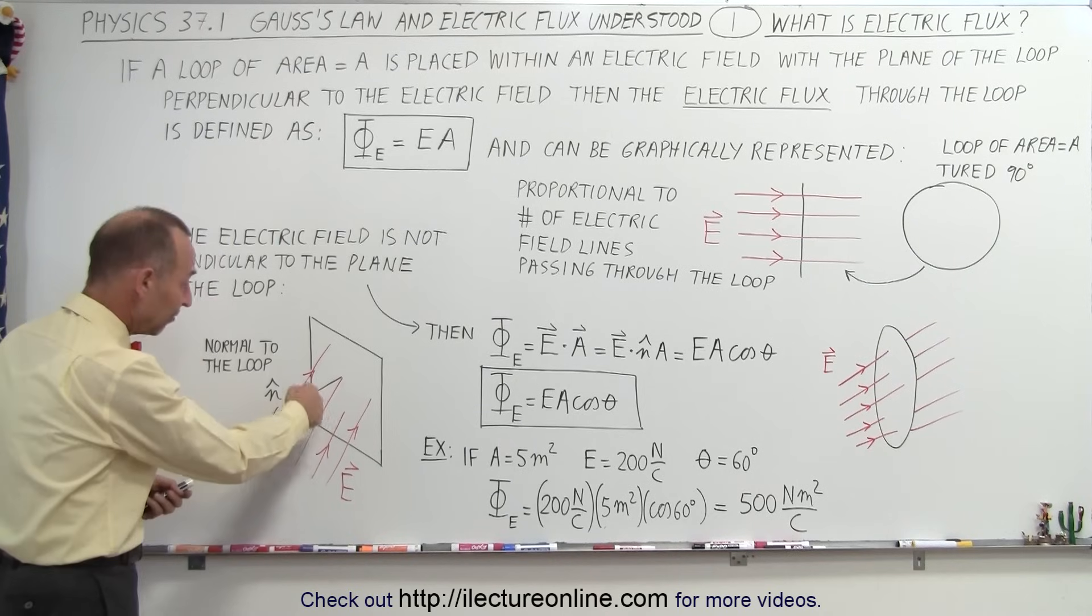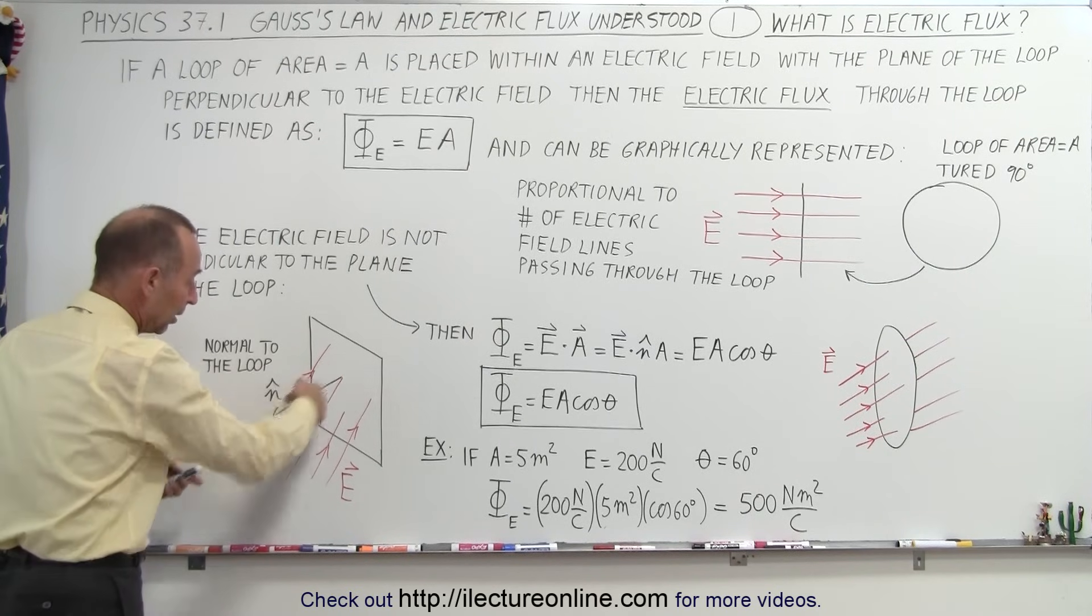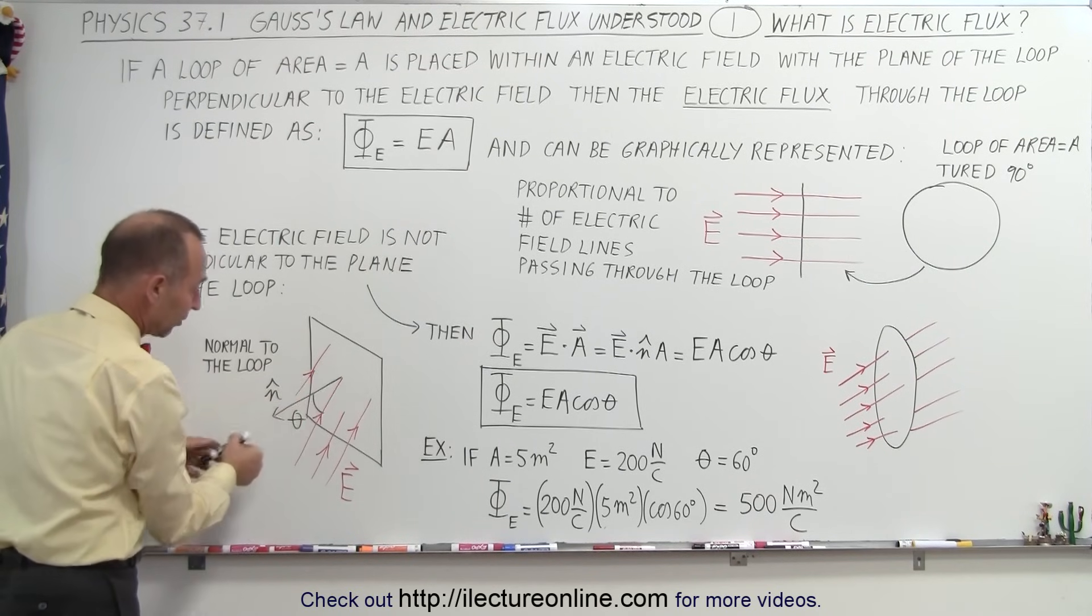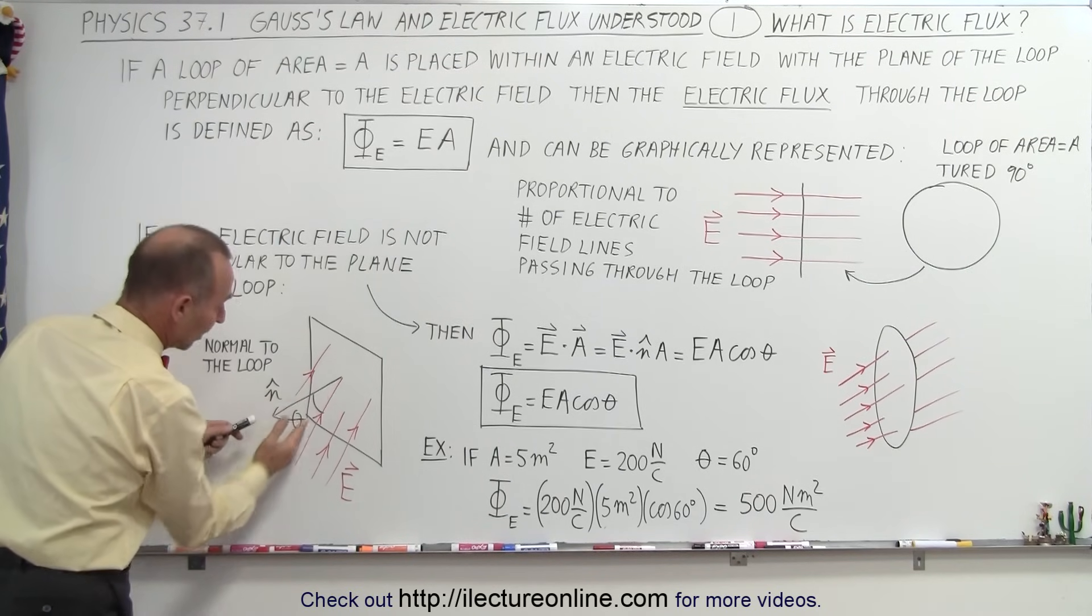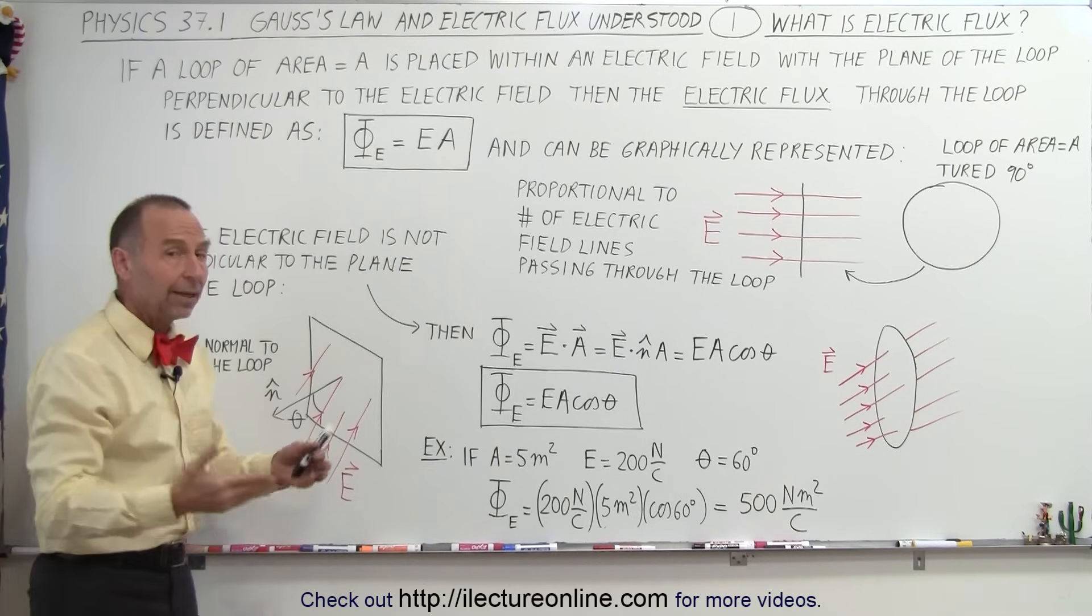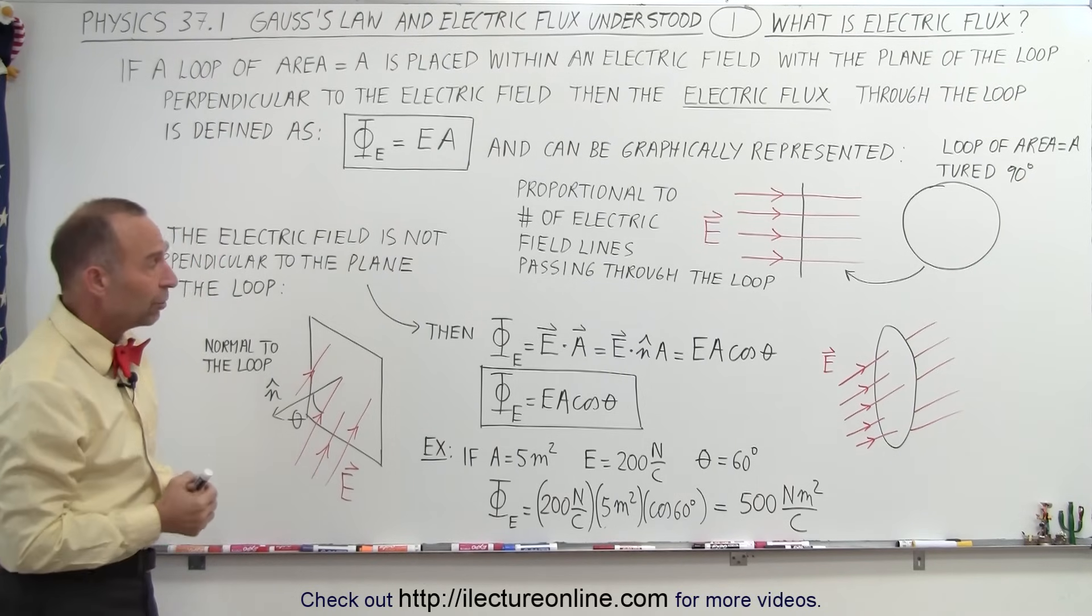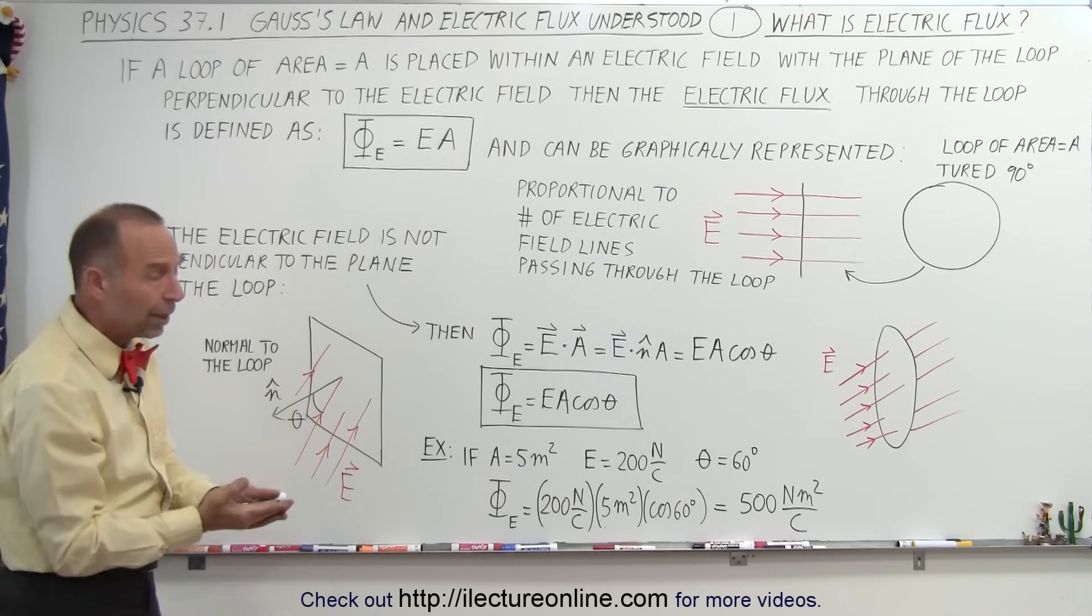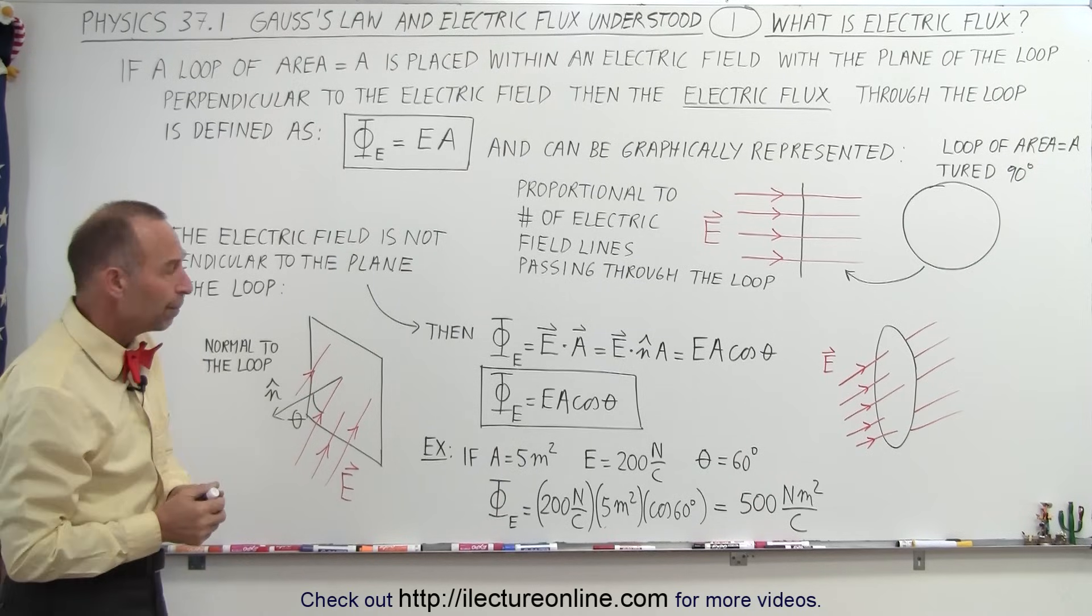Here you can see that if theta represents the angle between the perpendicular normal vector and the direction of the electric field, then it's simply the magnitude of the field times the size of the area of the loop times the cosine of the angle between them.